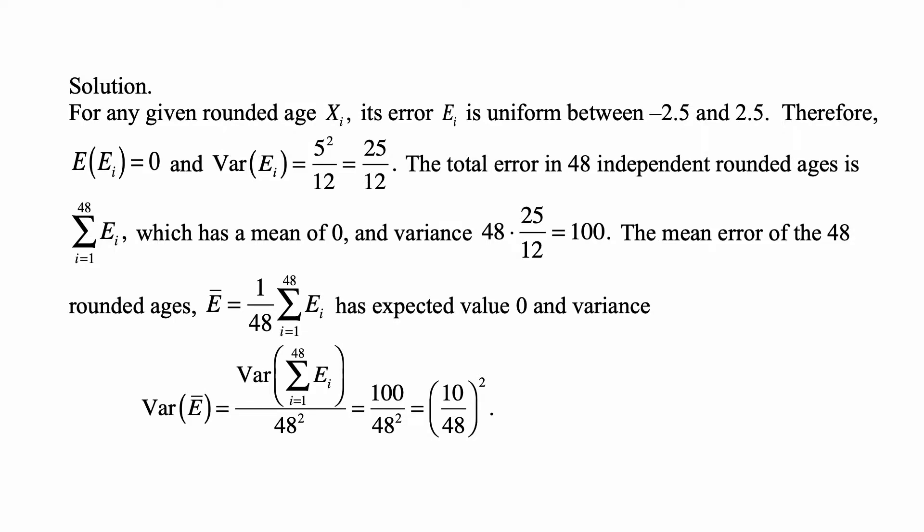And here's the solution. For any given rounded age X_i, its error E_i is uniform between negative 2.5 and 2.5. Therefore, the expected value of E_i is 0, and the variance of E_i is 5 squared divided by 12, which is 25 over 12.